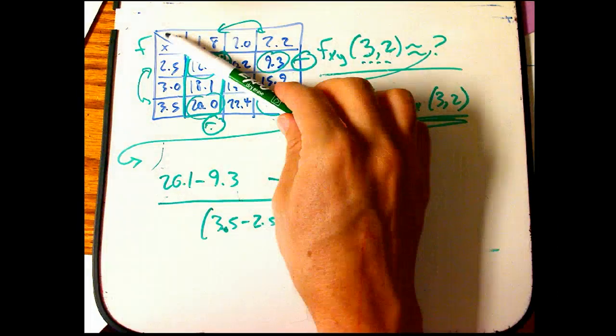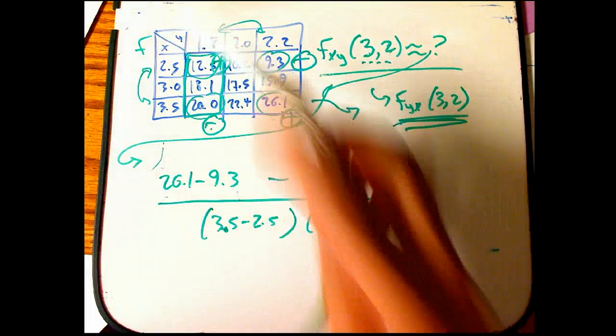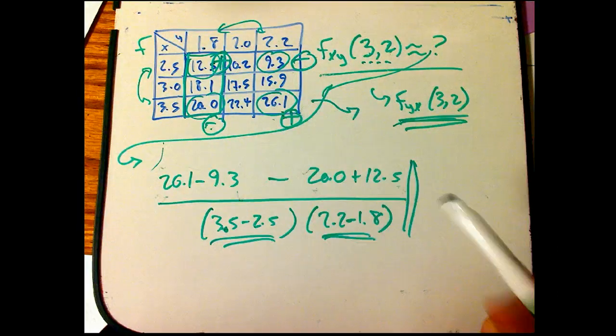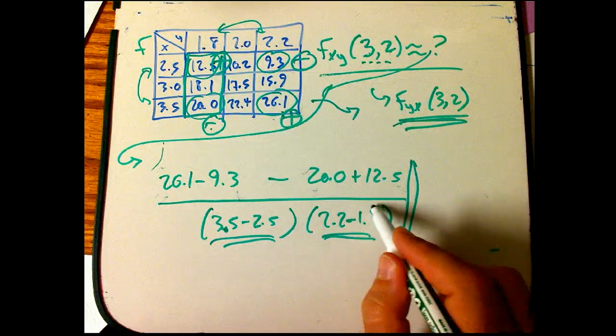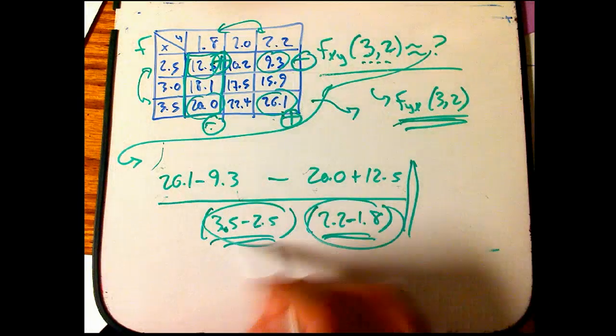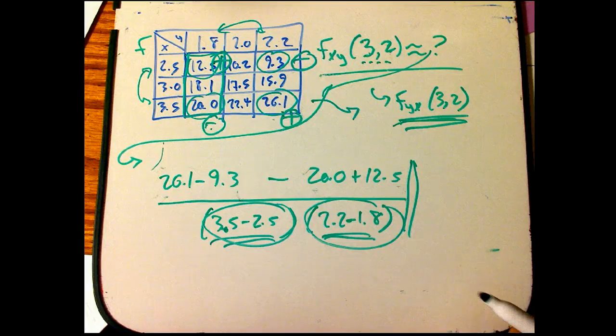Basically because the pattern of signs is symmetric across that diagonal. And I'm going to divide by the denominators. It's going to happen to be that I'm going to notice that I need to divide by these first and then divide by these. But it doesn't matter what order you divide them in.